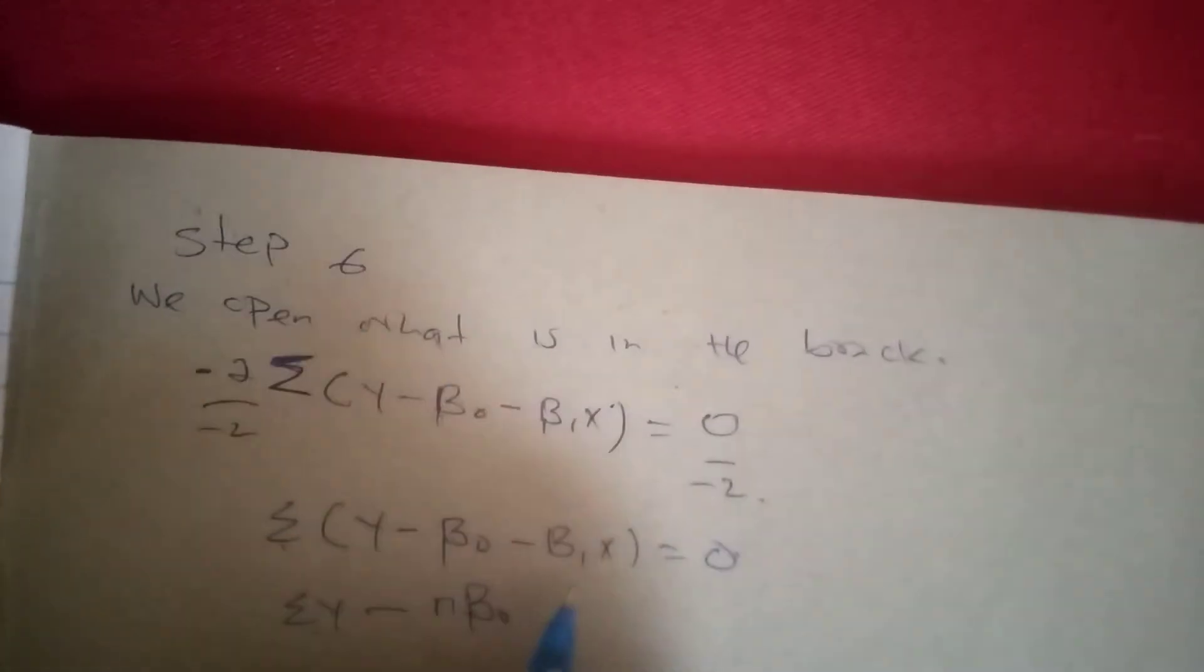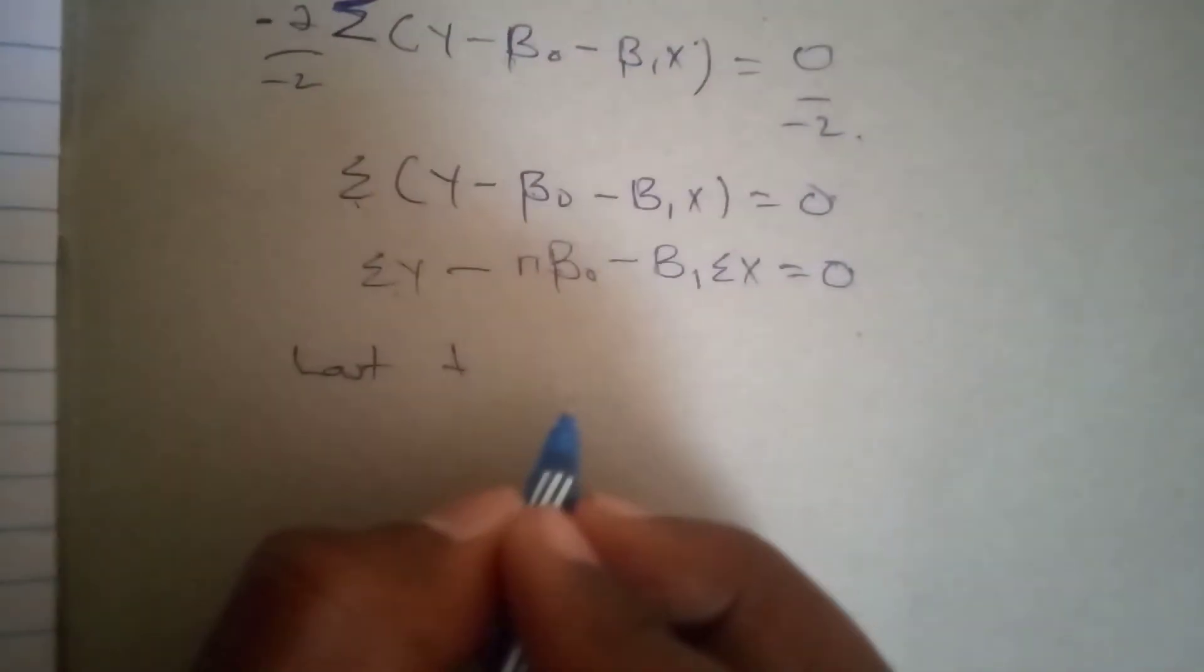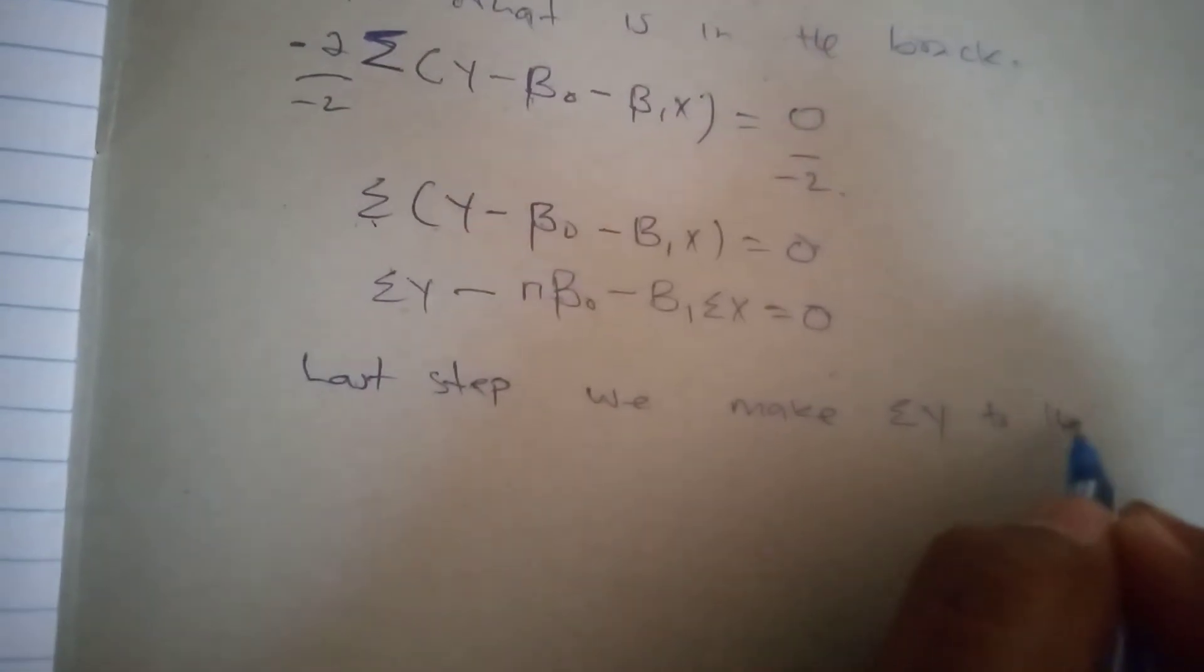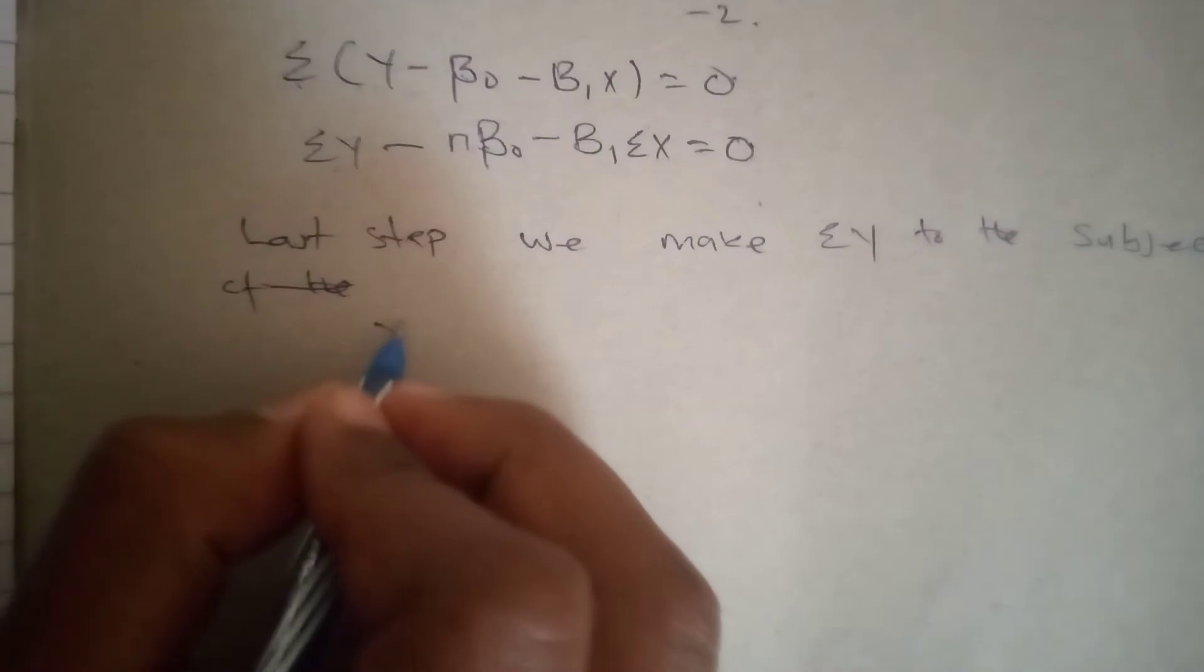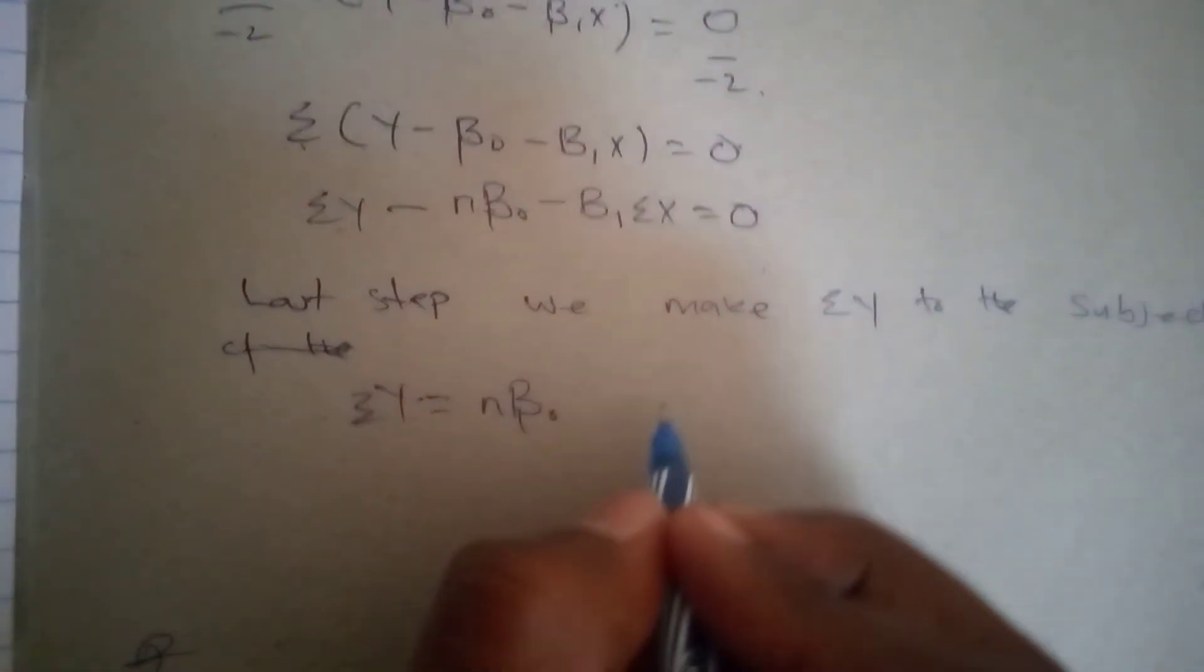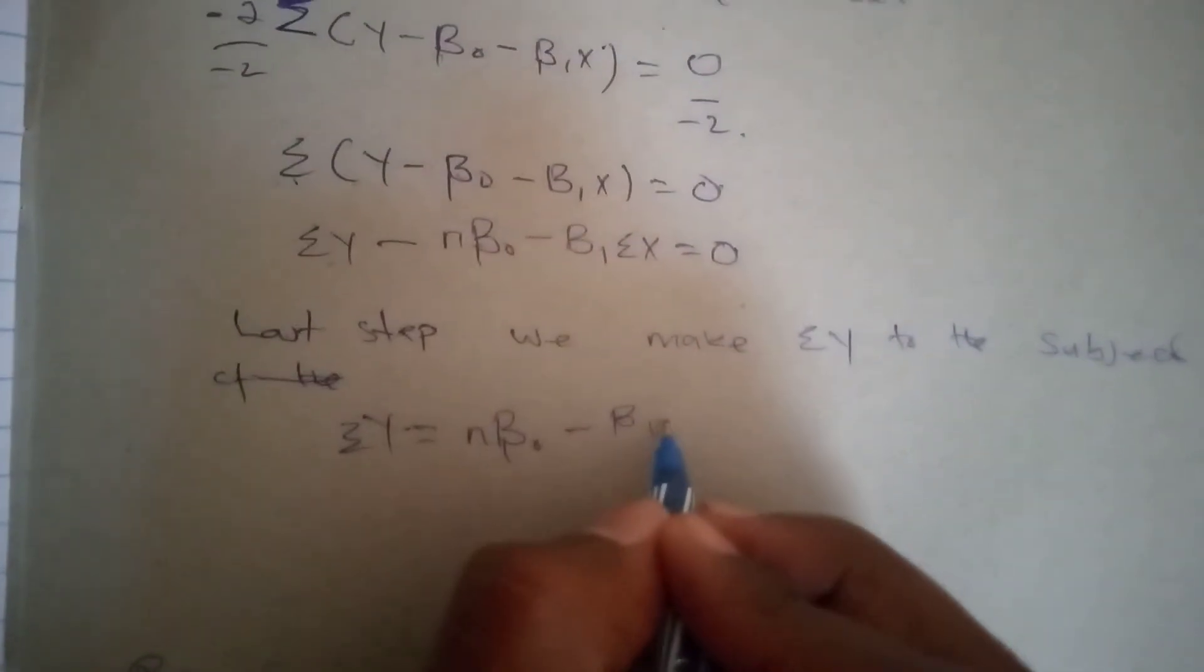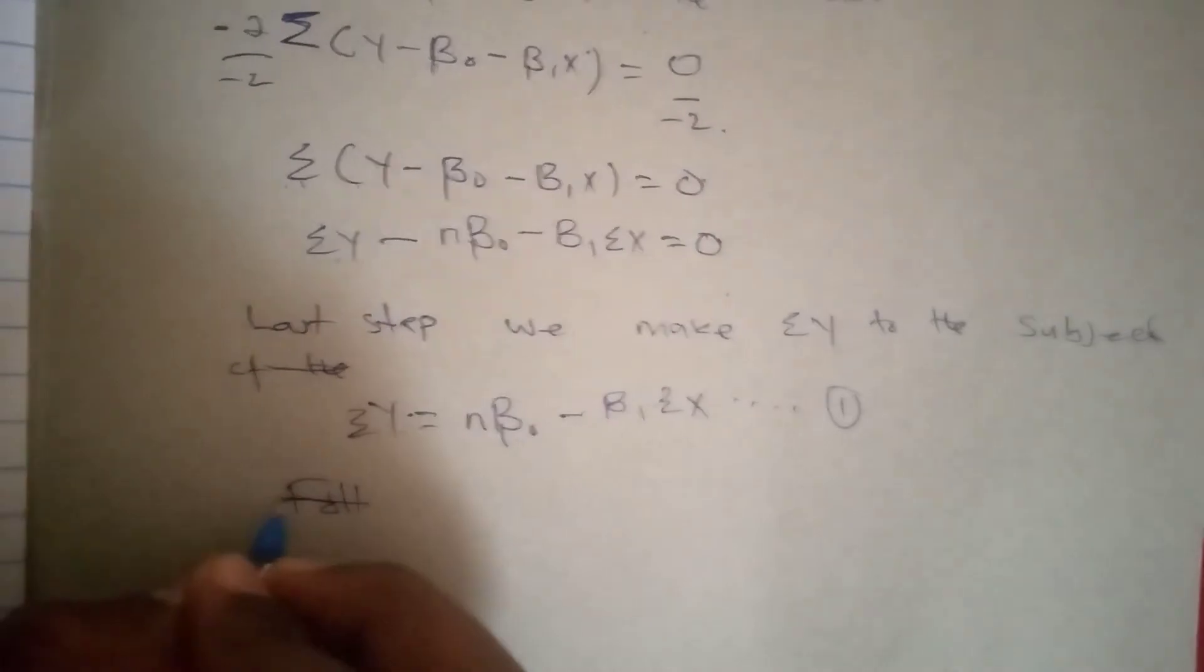Last step, we make summation of Y to be the subject. So Y equals NB₀, which is beta, minus beta 1 summation of X. And we are done with our equation one. Subscribe for the second part of the equation.